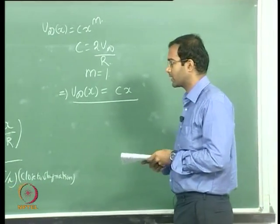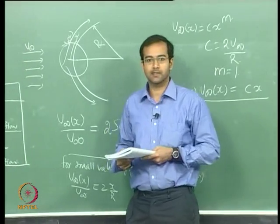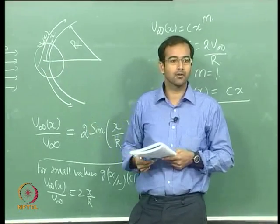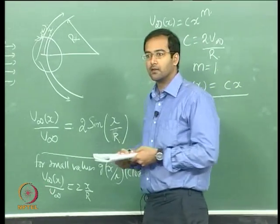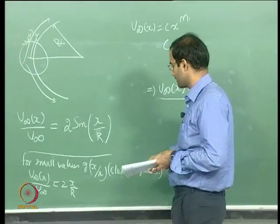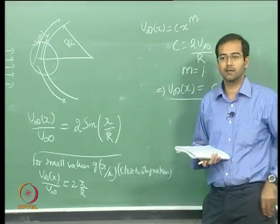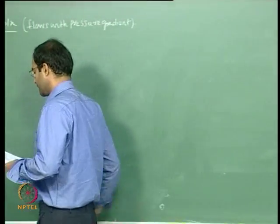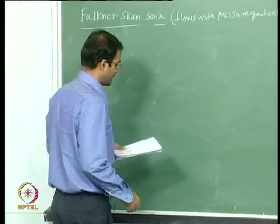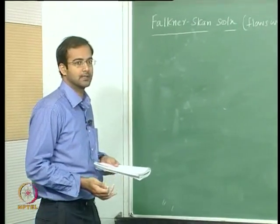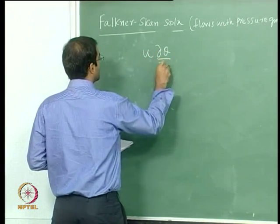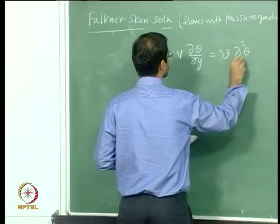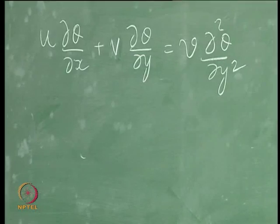This is a very useful correlation because to calculate heat transfer in the stagnation region of a cylinder you can solve the energy equation from the Falkner-Skan solution. Now we move on to the heat transfer problem. The boundary layer energy equation for flows with or without pressure gradient is the same. Without the viscous dissipation term, the energy equation involves θ defined as (T − T_w)/(T∞ − T_w).